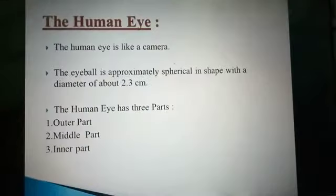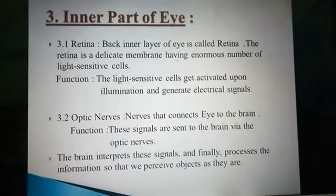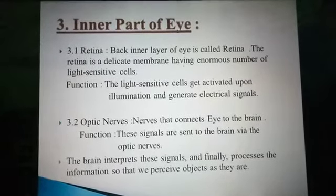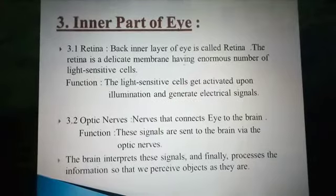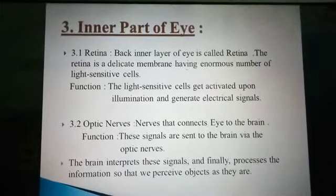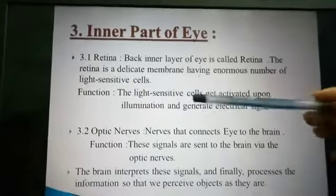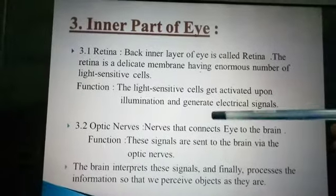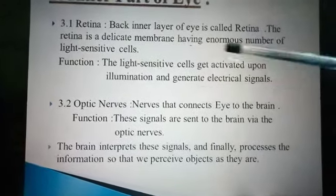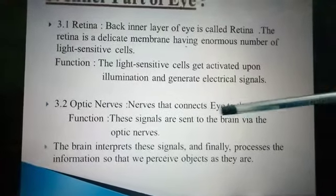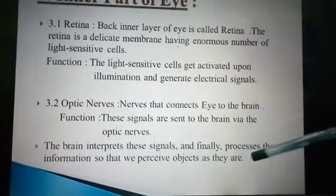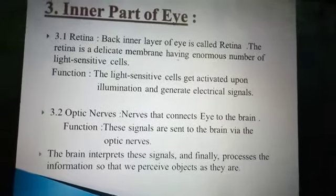The inner part — retina — is the back inner layer of the eye, a delicate membrane containing light-sensitive cells. Rods and cones are present: rods are for night vision and cones are for day vision and color. These light-sensitive cells get activated upon illumination and generate electrical signals. Optic nerves connect the eye to the brain and send these signals to the brain. Interpretation is done by the brain so that we perceive objects.